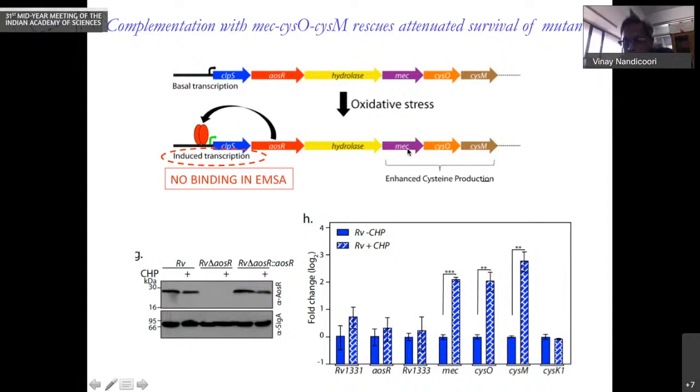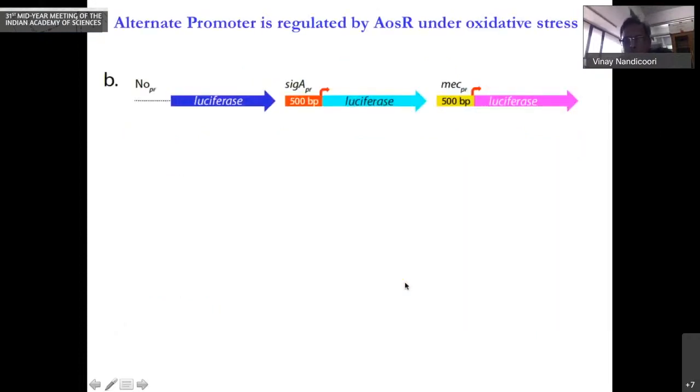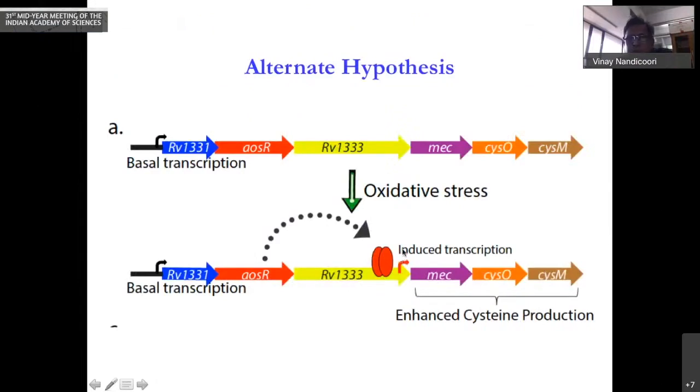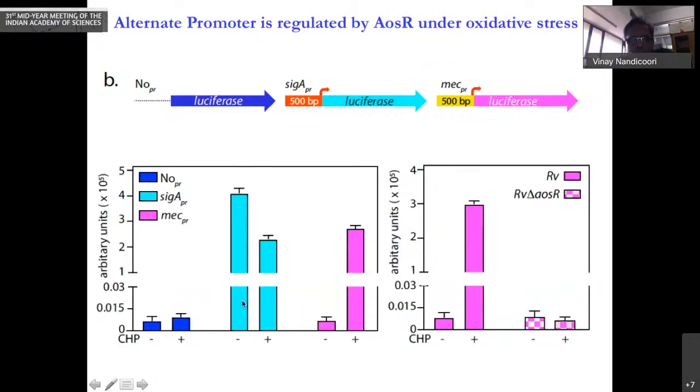We came up with an alternate hypothesis where we thought the transcription factor binds to an alternate promoter which is normally not active but becomes active only upon stress. To prove this, we took this alternate promoter and performed a reporter assay. Without any promoter, with Sigma A promoter as positive control, and the alternate promoter in front of luciferase. You can clearly see that Sigma A promoter, this is without oxidative stress and the next one is with oxidative stress.